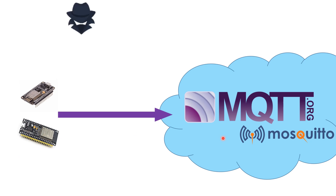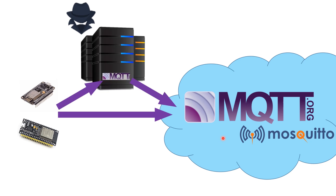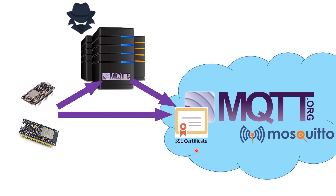If someone with malicious intent wanted to spoof a server, they could perform a man-in-the-middle attack — intercepting all your messages, keeping a copy, then forwarding them to your server. The only way to prevent this is to use an SSL certificate. This certificate is given only to your Mosquitto client on a Raspberry Pi, so hackers can't obtain it, preventing man-in-the-middle attacks.